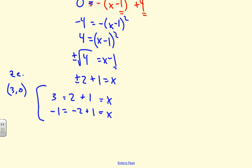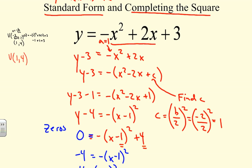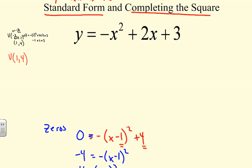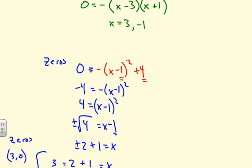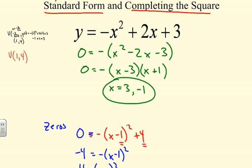The zeros are x-intercepts at (3, 0) and (negative 1, 0). We can verify by taking the original equation, setting it equal to zero, and factoring out a negative: we get x squared minus 2x minus 3, which factors as (x minus 3)(x plus 1) equals zero, giving x equals 3 and x equals negative 1 — the same values.